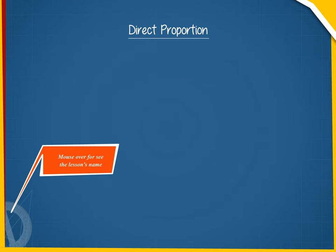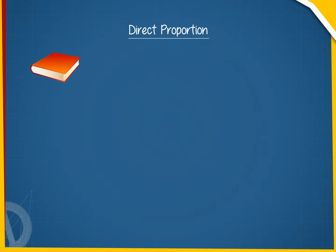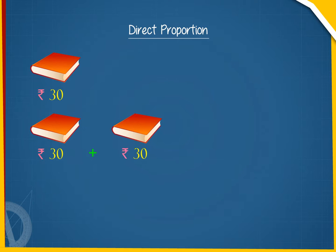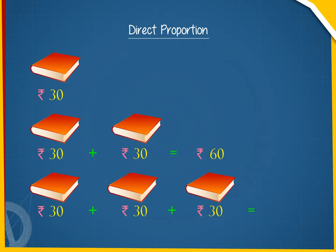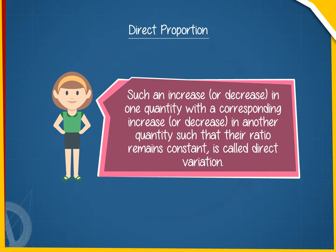Direct Proportion. Suppose the cost of a book is Rs 30, then the cost of two such books is twice this amount, i.e. Rs 60. The cost of three such books is thrice, i.e. Rs 90, and so on. Such an increase or decrease in one quantity with a corresponding increase or decrease in another quantity, such that their ratio remains constant, is called direct variation.